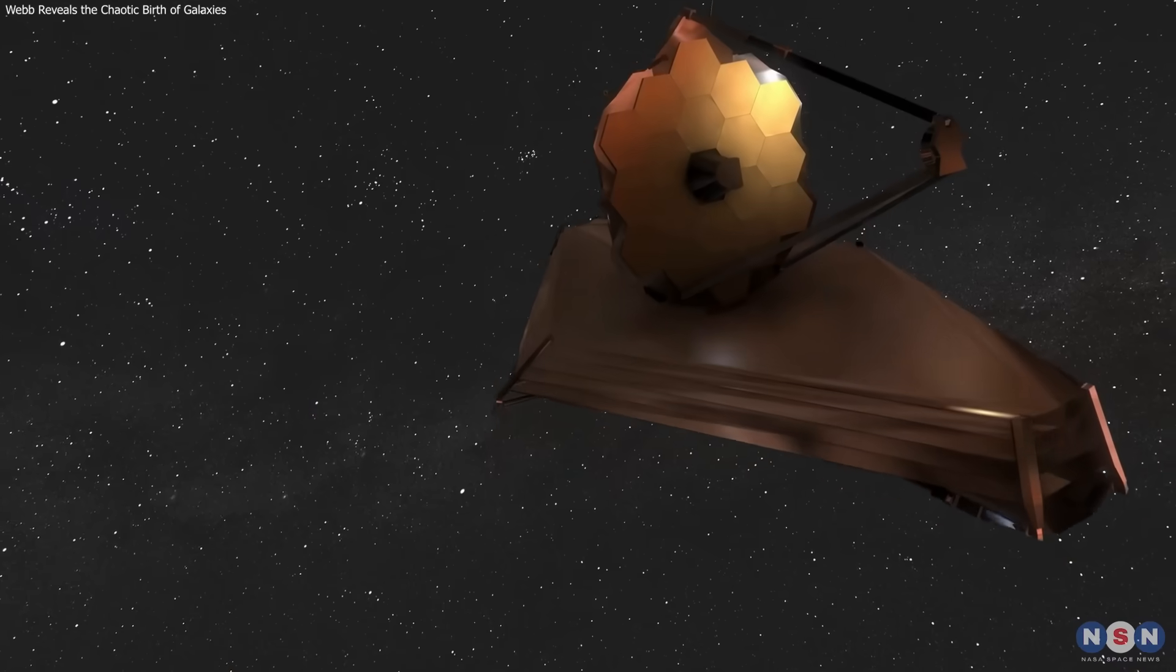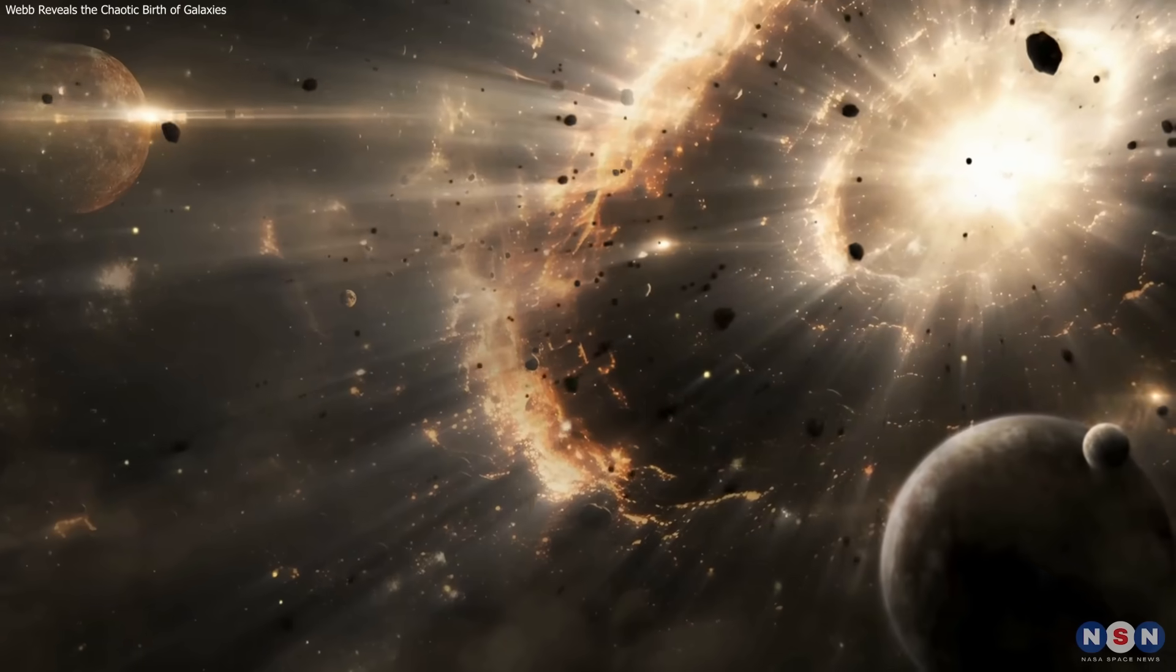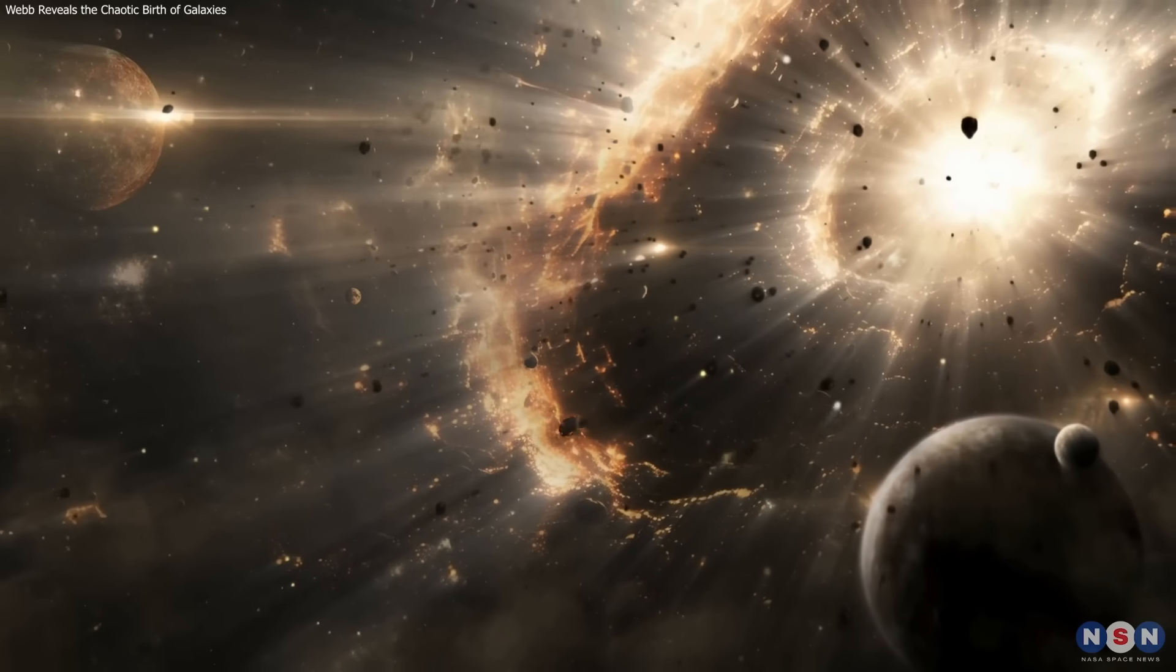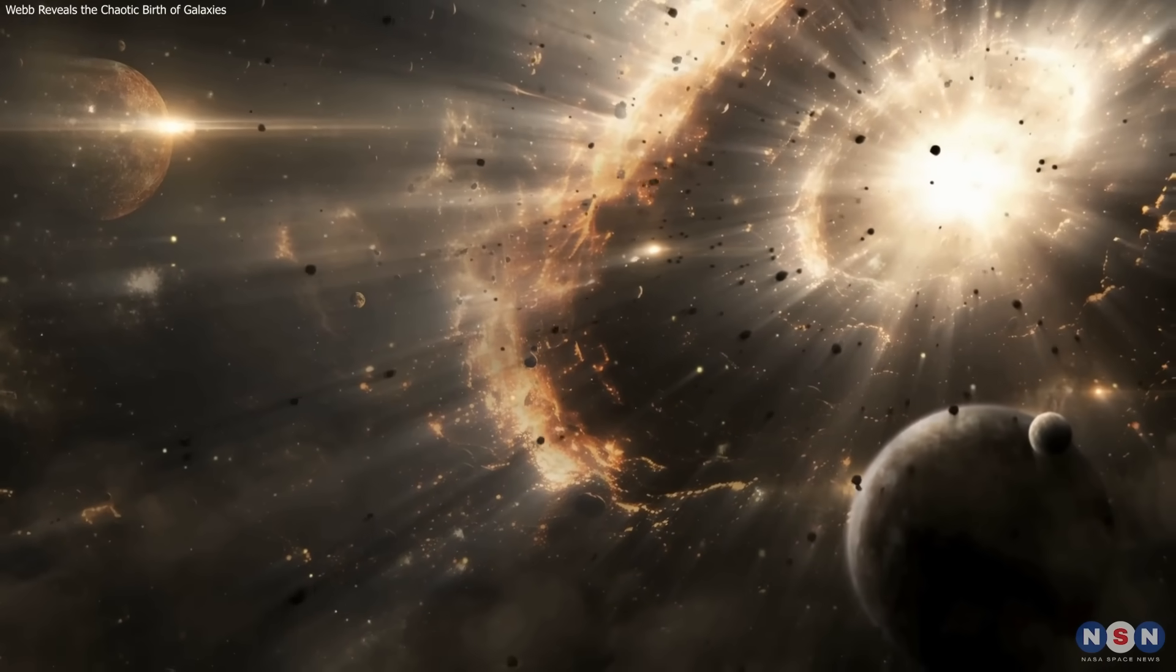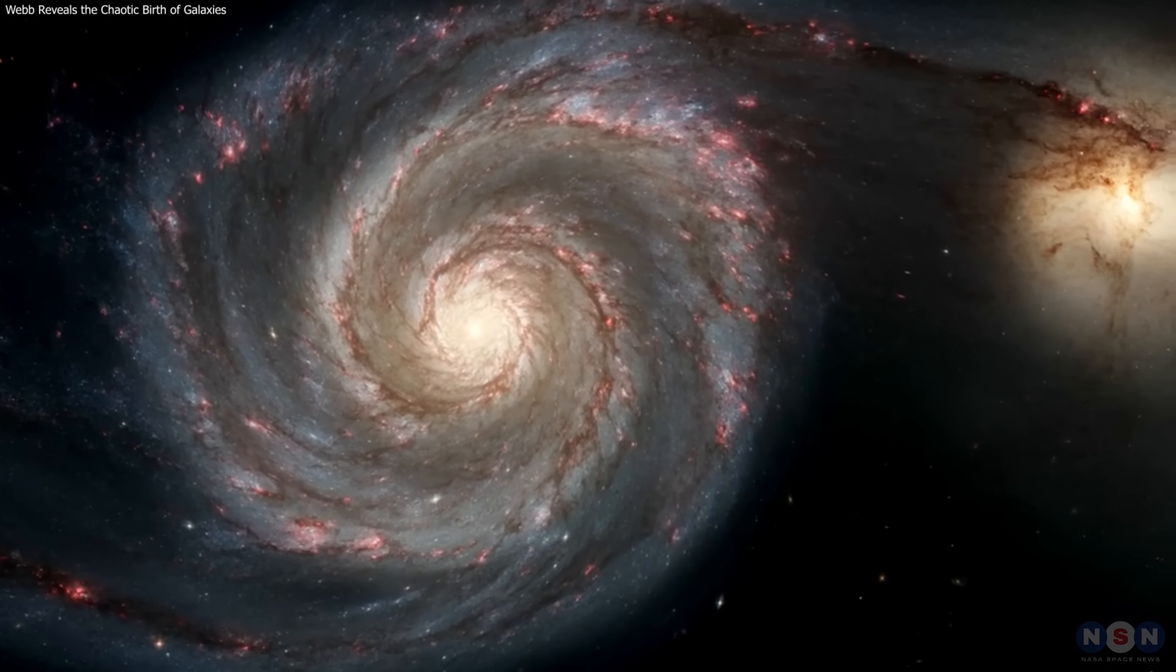The James Webb Space Telescope shows early galaxies were chaotic, not orderly. This confirms that cosmic structure emerged slowly through turbulence and change. It's a glimpse of how galaxies like ours grew from chaos into order.